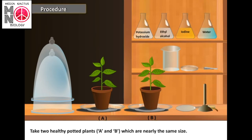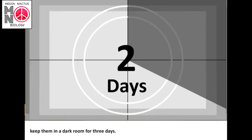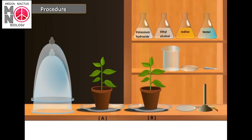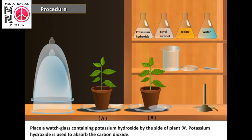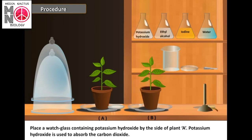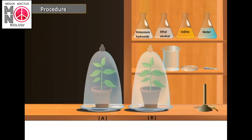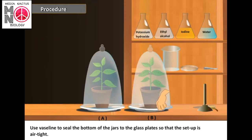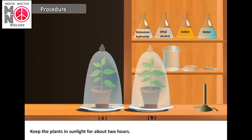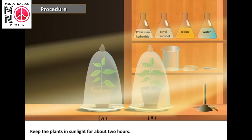Procedure: Take two healthy plants A and B, which are nearly the same size. Keep them in a dark room for three days. Now place each plant on a separate glass plate. Place a watch glass containing potassium hydroxide beside plant A — potassium hydroxide is used to absorb carbon dioxide. Cover both plants with separate bell jars. Use Vaseline to seal the bottom of the jars to the glass plate so that the setup is airtight.